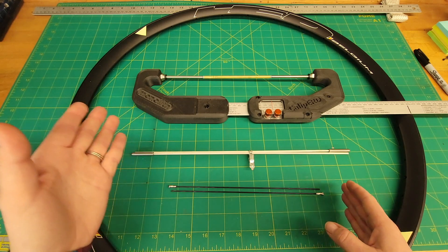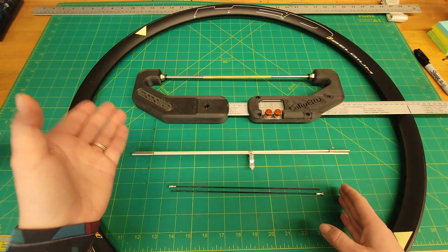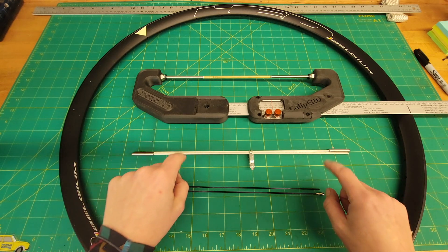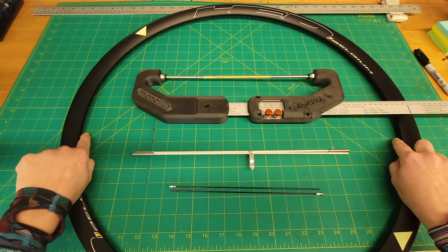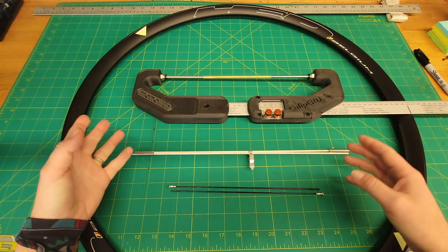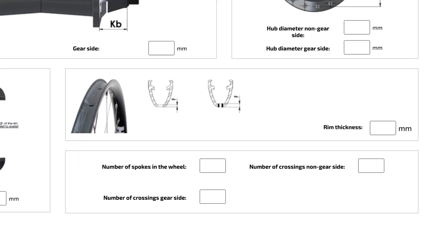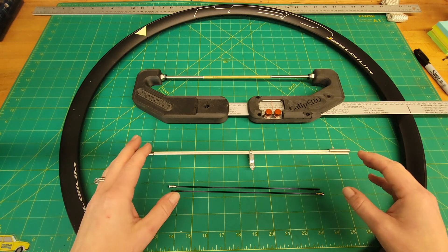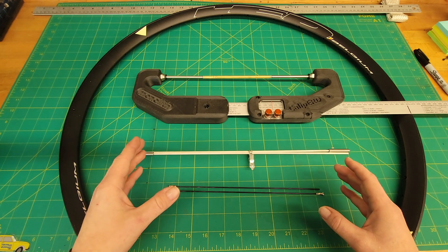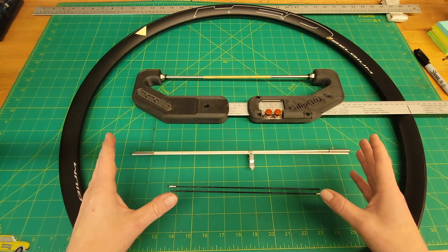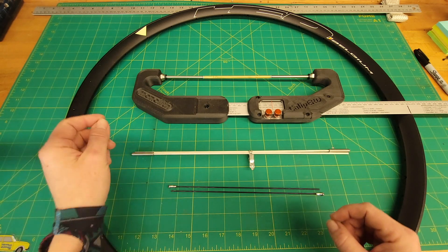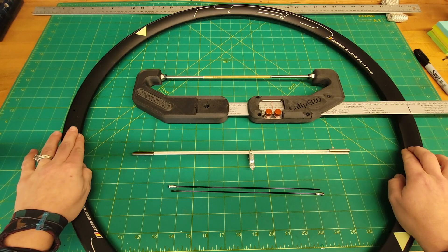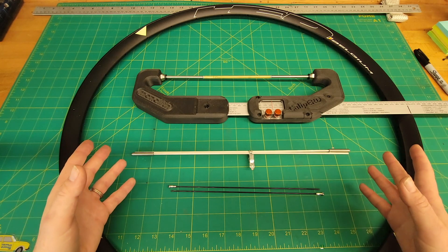Most spoke calculators do use ERD, with the exception of some like Cepime, who expects you to input the inner diameter of the rim to the edge and then separately input the width of the actual rim. The sum of those two items would actually just be the NSD, not the ERD — so they may be the only calculator that uses nipple seat diameter without actually asking you for the ERD.